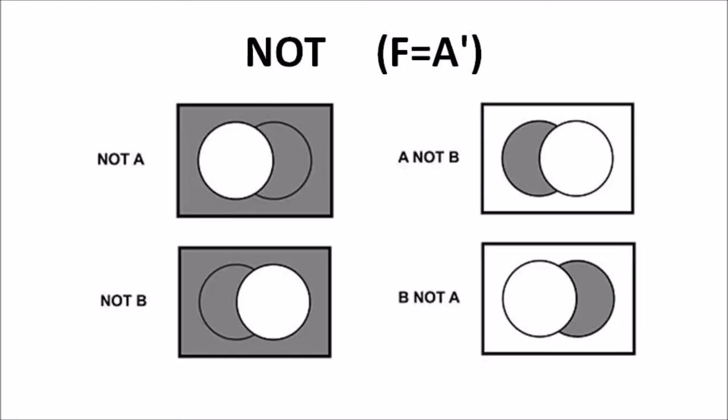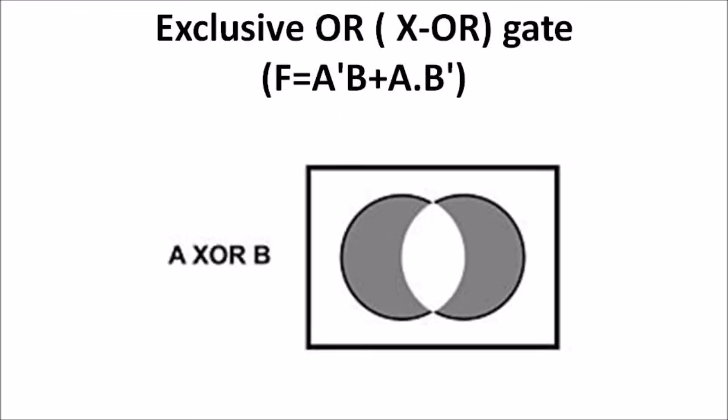The sixth representation is the NOT function, where f equals A-bar. The NOT gate has only one input and produces only one output. This gate is also known as an inverter gate, as it inverts the logic sense of a binary signal and produces the complemented function. If the input is one, this gate produces output zero, and vice versa.